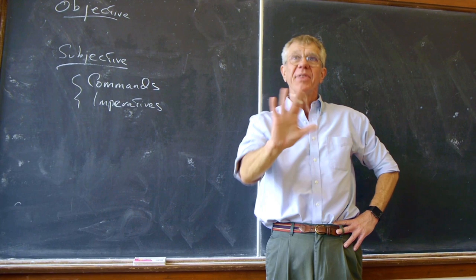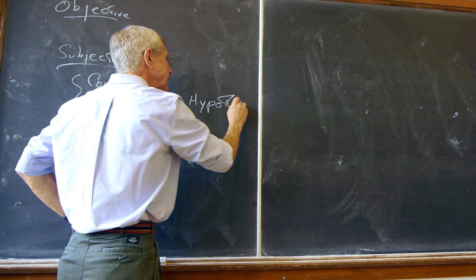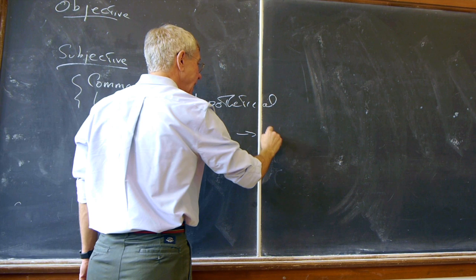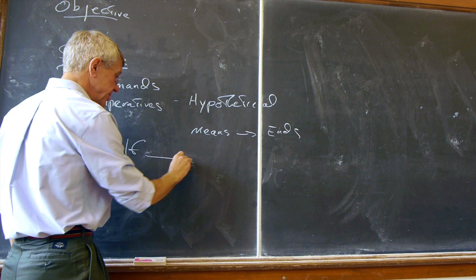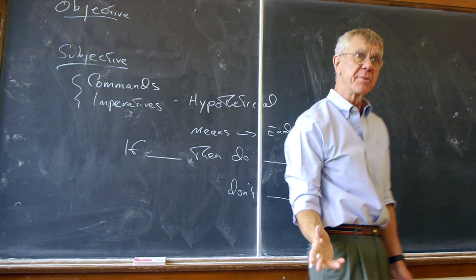So lots of things we think are like this. He calls them imperatives of skill, but they're also imperatives of desire. It's a question of choosing means to an end. Logically speaking, they all have this form: if such and such, then do or you ought to do blah blah blah. Or it might be a negative thing, then don't.